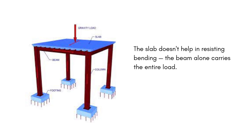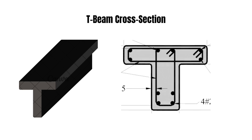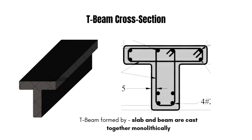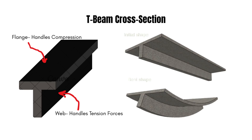In contrast, a T-beam is formed when the slab and beam are cast together monolithically, meaning they are poured as one unit. This creates a T-shaped cross-section, where the flange is the slab — the top horizontal part — and the web is the vertical stem of the beam. This structural integration transforms how the beam behaves under load.